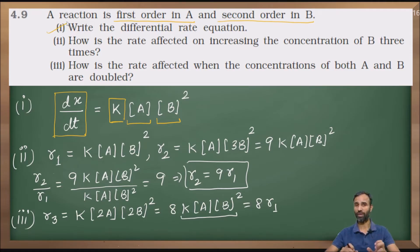Now, come to the second part. How is the rate affected on increasing the concentration of B three times? Rate of reaction, initial rate of reaction, is equal to K into A raised to power 1, B raised to power 2. This is the initial rate of reaction. Now, we will see how this rate is affected when concentration of B is three times. That means B becomes 3B.